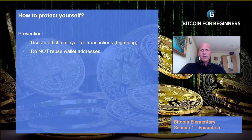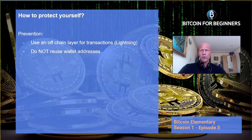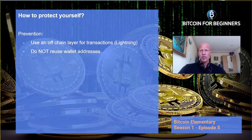As even written in the Bitcoin white paper, one way to protect your privacy and mitigate de-anonymization by dusting attacks is by not reusing wallet addresses from Bitcoin that was spent in the past. Generate a new address for each new incoming transaction. By doing this, you will prevent a lot of your transaction history being compiled and attached to one address, which would then all be compromised if a dusting attack succeeds on your wallet.